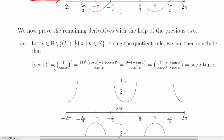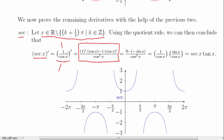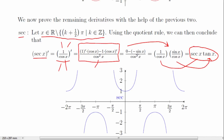Now we move on to secant. We let x be a value in the domain of secant, then rewrite secant in terms of cosine, since secant is defined as 1 over cosine. We apply the quotient rule: the derivative of the top times the bottom, minus the top times the derivative of the bottom, all divided by the bottom squared. Simplified, we get an answer in terms of cosine and sine, which we convert back to the six trig functions. The result is that the derivative of secant of x is secant of x times tangent of x.